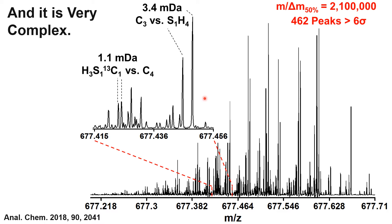Even if the GC-based techniques were able to get these materials off the column, the mass analyzer would be incapable of resolving them. An example is shown at one nominal mass where there are 462 peaks detected in a weathered oil sample. By any other mass spectrometer, this would be one or a collection of unresolved peaks. However, in the high resolution instrument you can clearly see baseline resolution and determination of the accurate mass for all 462 peaks.